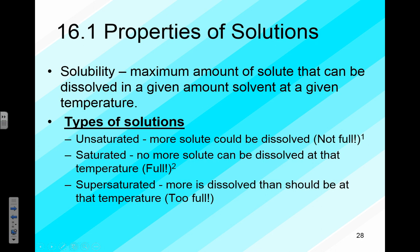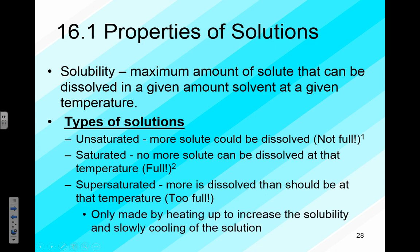A supersaturated solution is made by heating water to increase solubility, dissolving a large amount of solute, then slowly cooling it. The water must have completely dissolved the solute — if any seed crystal remains, it will trigger recrystallization. Many substances will stay dissolved even though they're not supposed to, but it's very unstable. Adding a seed crystal or even shaking it can cause all the excess solute to come back out of solution.